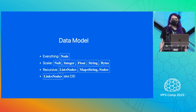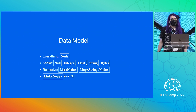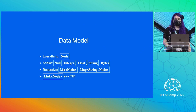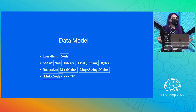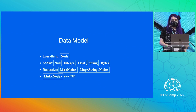We also have a special data type called a link, which can link to another node — which you might also have seen called a CID. So together, these data types can be used to represent most kinds of data that you might see in an application.